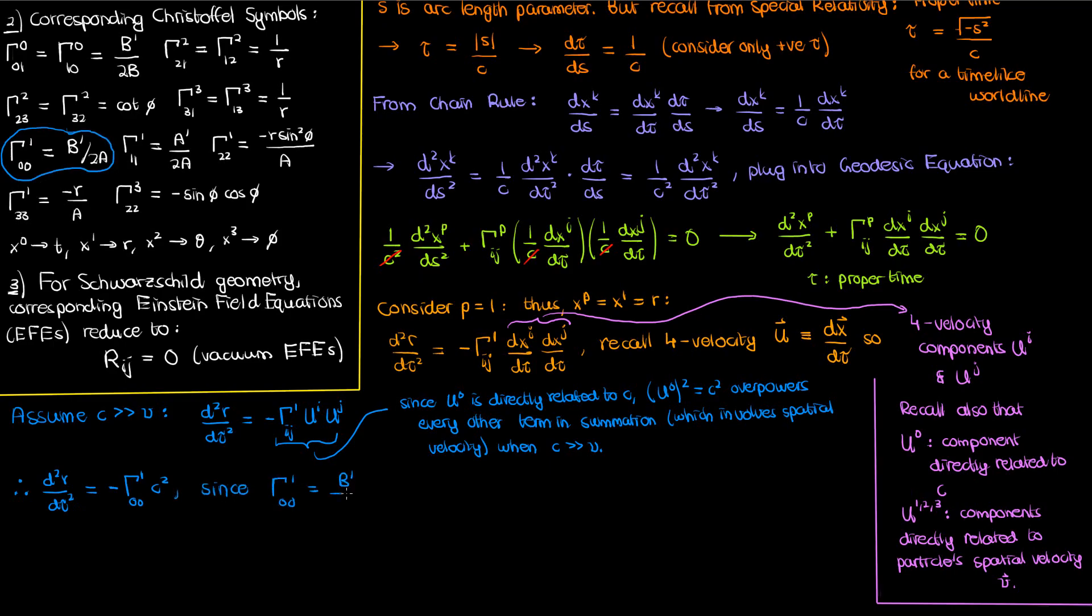We can plug in the Christoffel symbol to get the following equation. Now if we substitute 1 over A as B and B' as negative R_S over R squared, this is what we get for our second tau derivative in R.